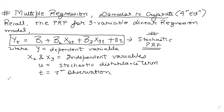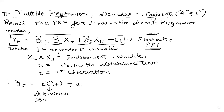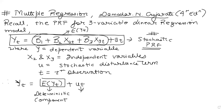This is our stochastic population regression function for the three-variable linear regression model. We can write it as Yt = E(Yt) + Ut, where E(Yt) is the deterministic component equal to B1 + B2*X2t + B3*X3t, and Ut is the population disturbance term.